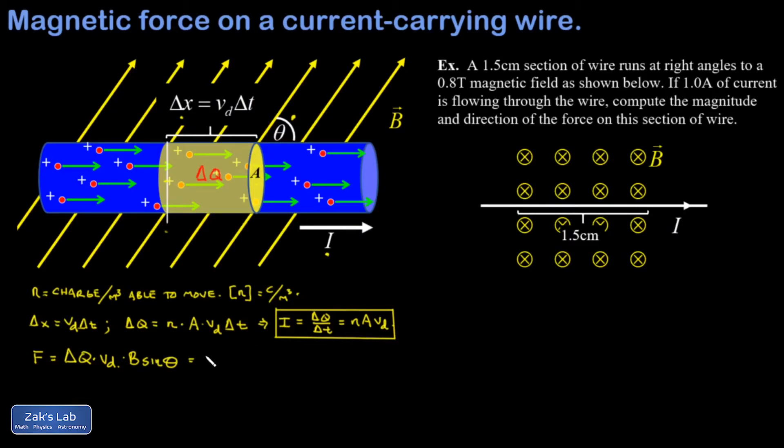Well, we already found that our delta Q is given by this expression. Now, recalling that this little v_D times delta T is really just delta X, I can write down my delta Q as n A delta X.